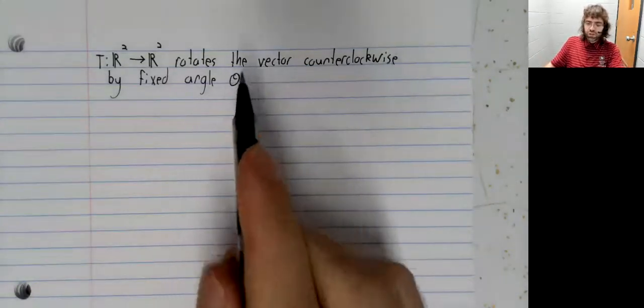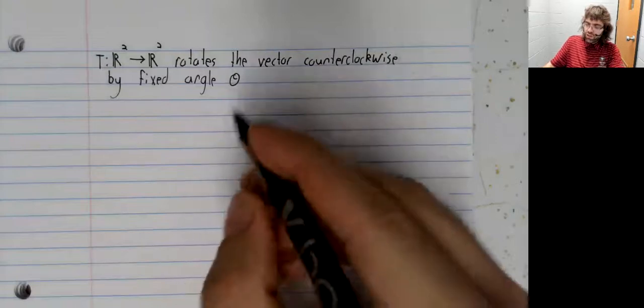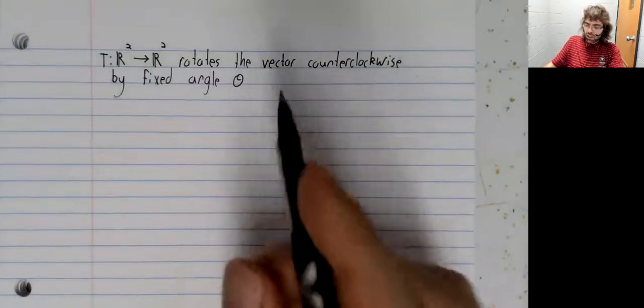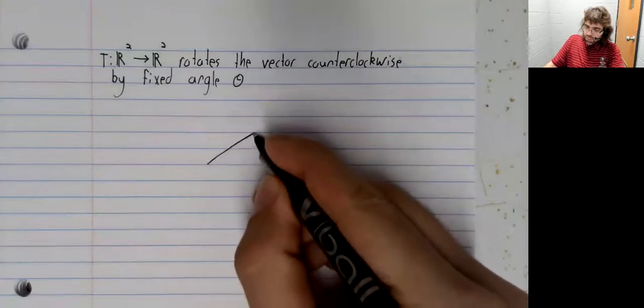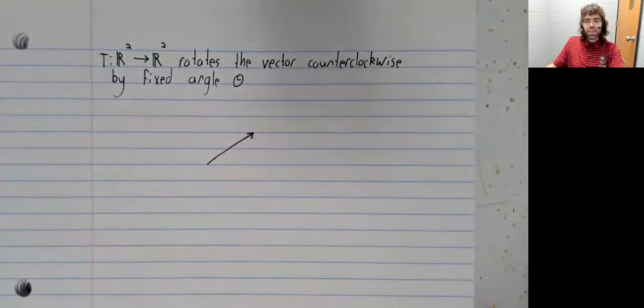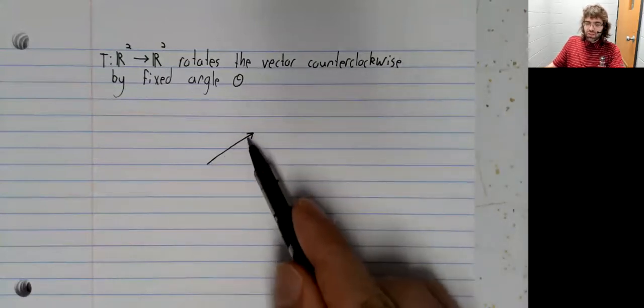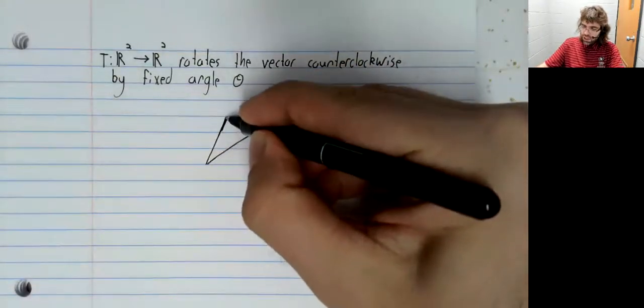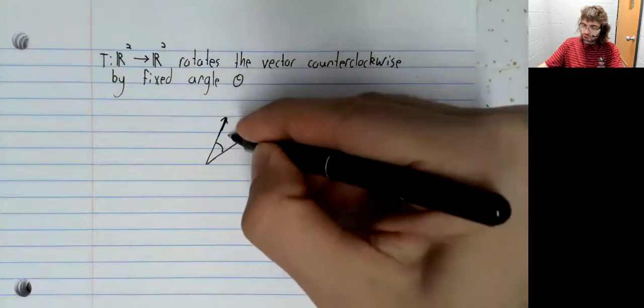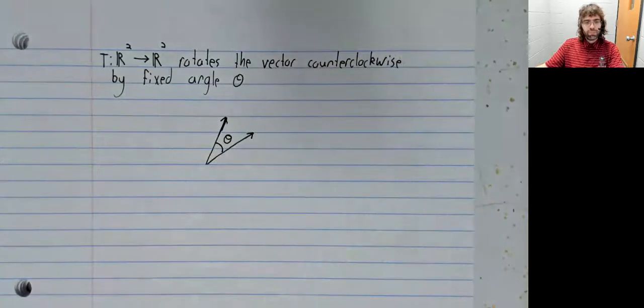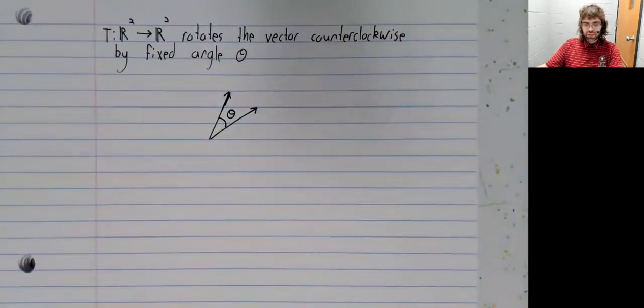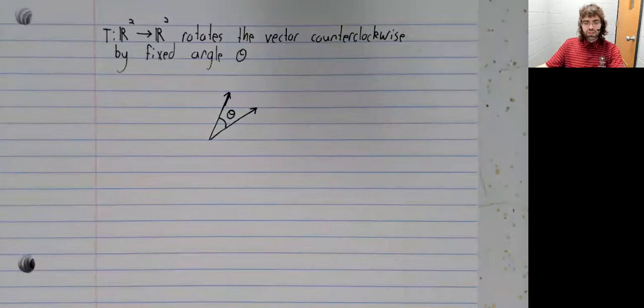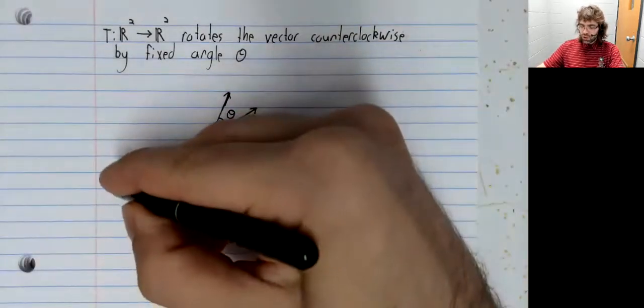So what this transformation does is it fixes an angle theta. On R2, we can represent our vectors visually like this. And this transformation takes this vector and rotates it counterclockwise by theta radians. Let's find the matrix of this linear transformation.